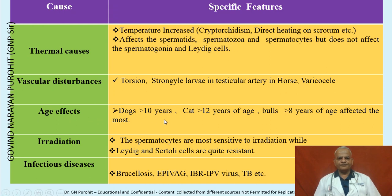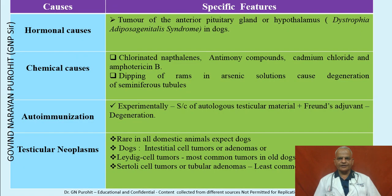With age, some testicular degeneration is normal — in dogs at 10 years, cats at 12 years, and bulls greater than 8 years of age. Spermatocytes are more sensitive to irradiation while Leydig and Sertoli cells are resistant. Infectious diseases like brucellosis, epivag, and IBR can result in testicular degeneration.